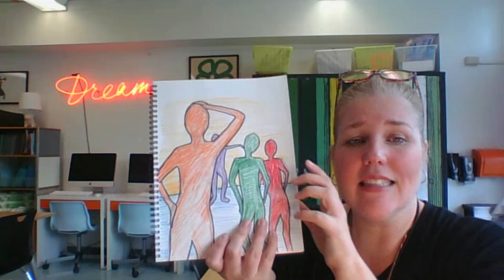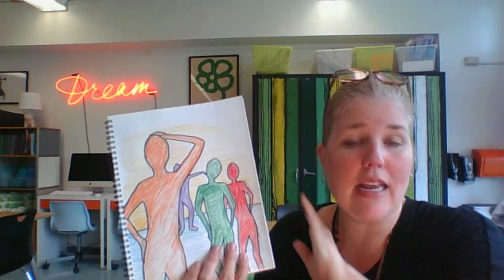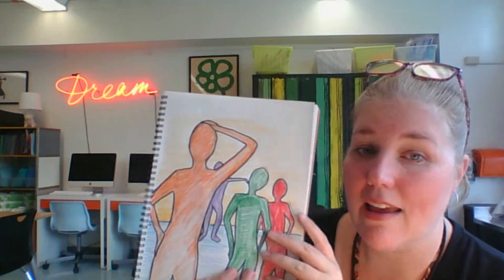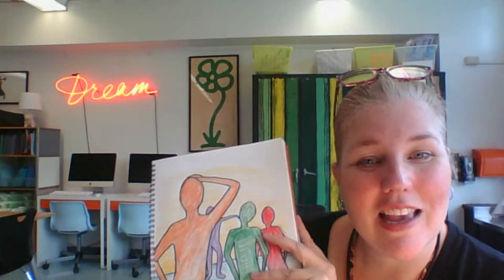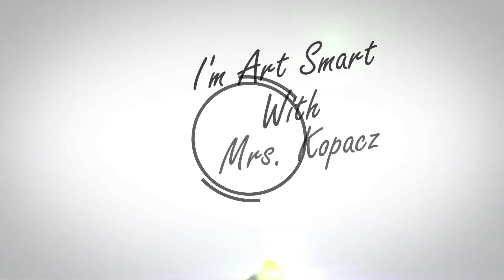Remember that as things move away from you, they get smaller. My hand is the closest thing to the camera right now, so it looks huge — like the biggest thing in the room. As it moves back, it gets smaller. That's why my people are the largest when they're close, and as they move away they get smaller — this little purple guy in the background is very, very teeny tiny. Looking forward to seeing what you come up with. Be creative, and I will see you guys next week. Bye-bye.